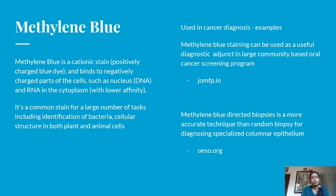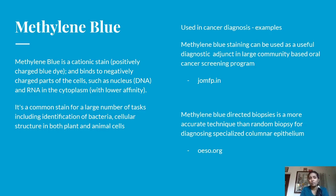Next is Methylene Blue. Methylene Blue is a cationic, positively charged blue dye that binds to negatively charged parts of cells such as the nucleus and RNA in the cytoplasm. It is a common stain for a large number of tasks including identification of bacteria and cellular structures in both plant and animal cells, as well as cancer diagnosis.